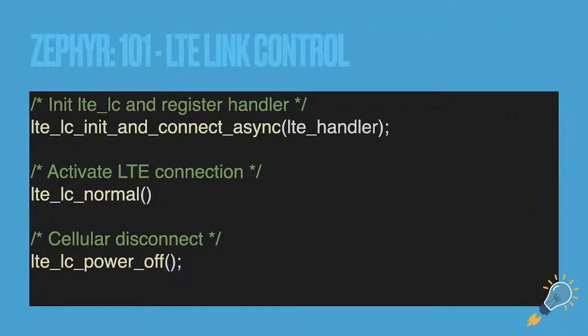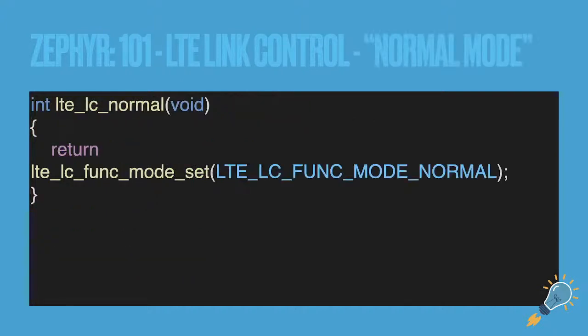So here are the LTE link control functions. These should look familiar for anybody who's played with nRF9160s. These are just some examples of the higher level commands and we can kind of dive in lower. So I went in and I looked at the LC normal command. You can see it's running another API, which is called the LTE LC func mode set, which is just a function mode set, which is the ATC fun command.